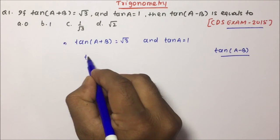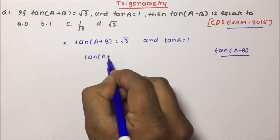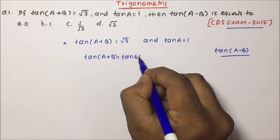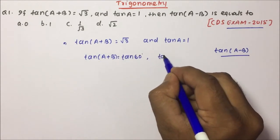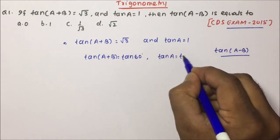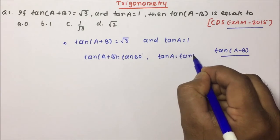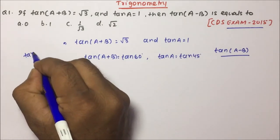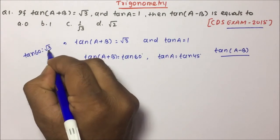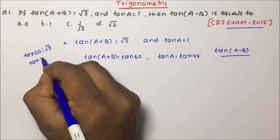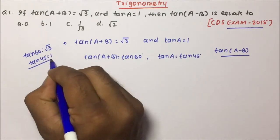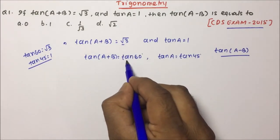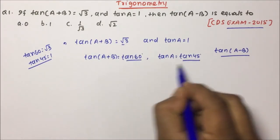So tan(A+B) equals root 3, and we can write root 3 as tan 60°. And tan A equals 1, which we can write as tan 45°, because the value of tan 60° is root 3 and the value of tan 45° is 1. So we have replaced the values with tan 60° and tan 45°.